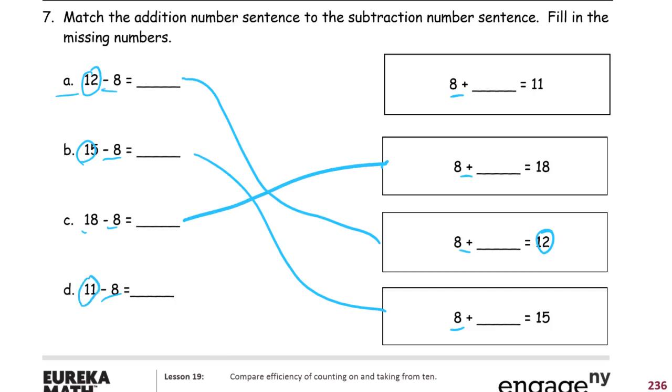And this has a whole, subtraction has a whole of 11, and this addition one up here has a whole of 11. So that's how they're going to match up. And now we've just got to figure out what the missing numbers are. If we figure out one, we'll know what its related addition sentence is.